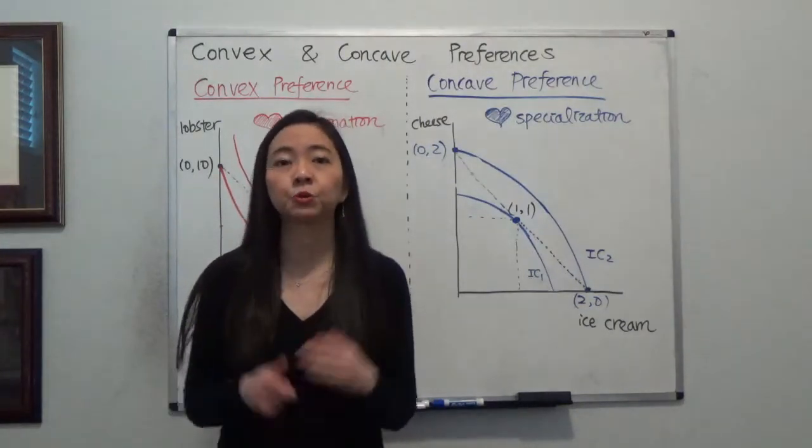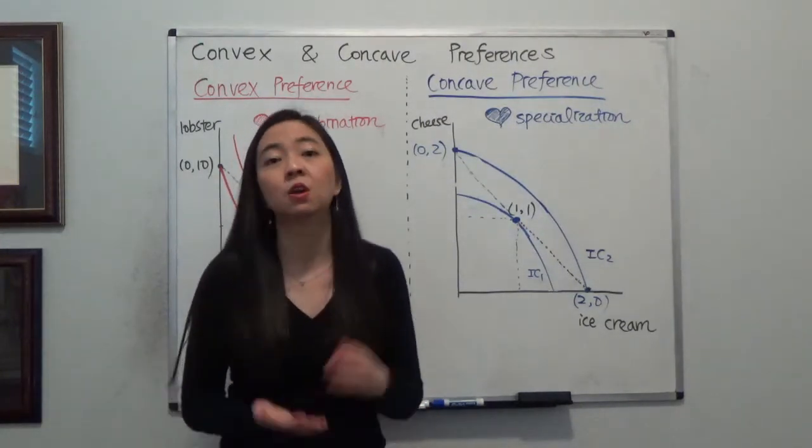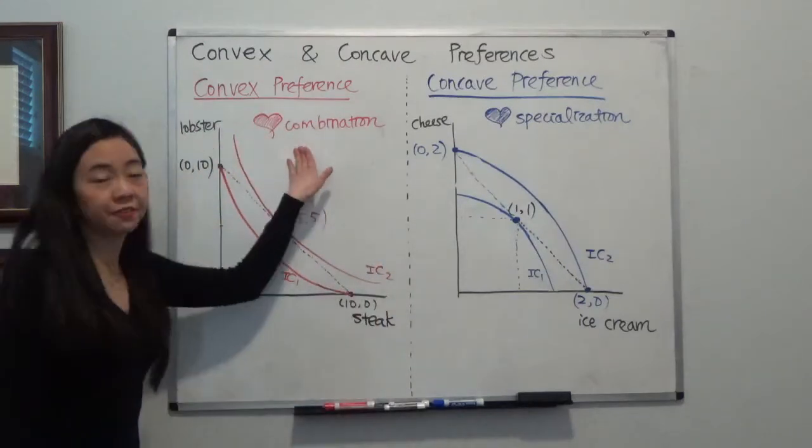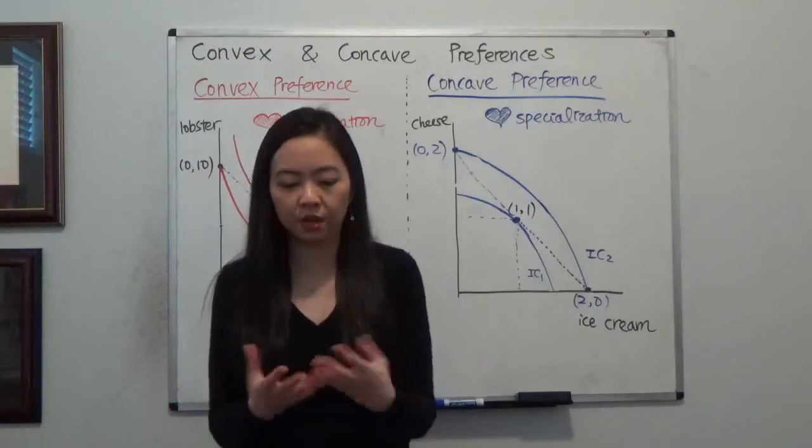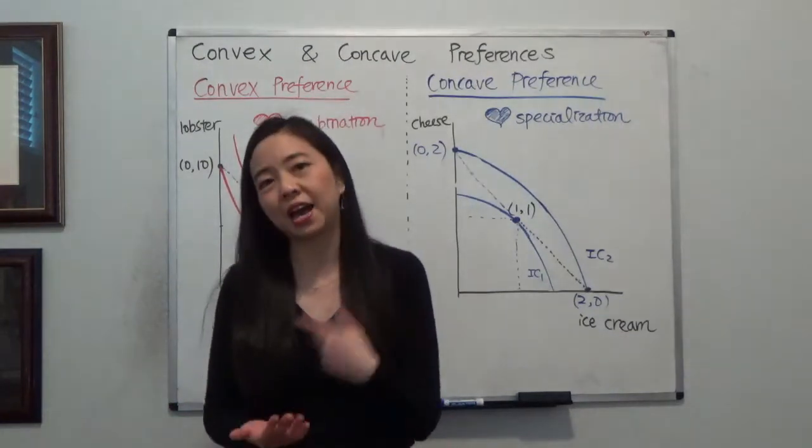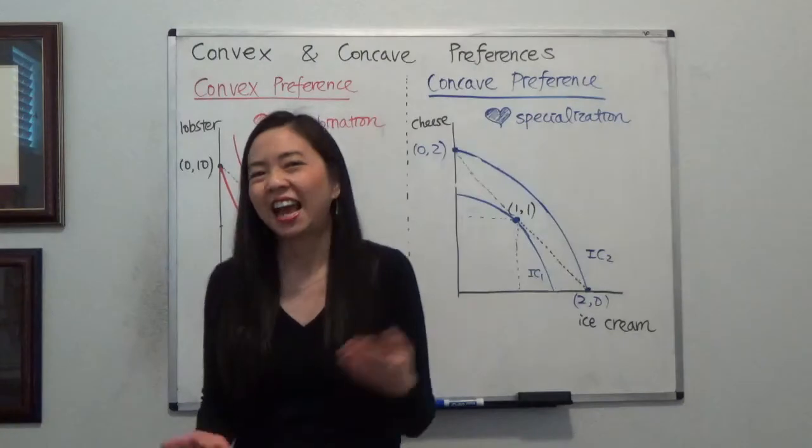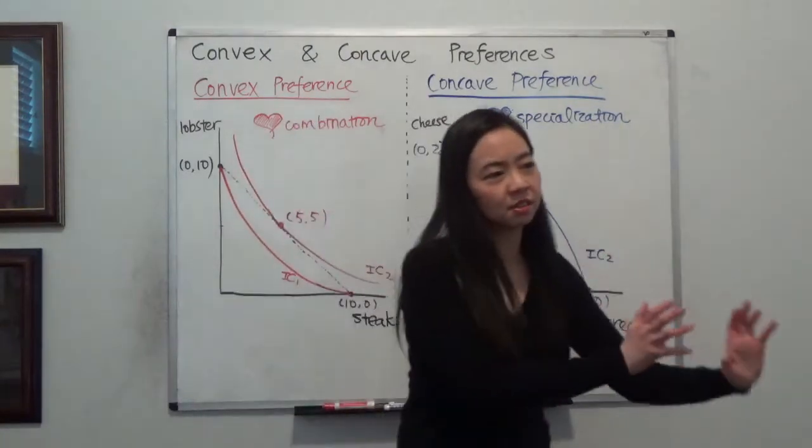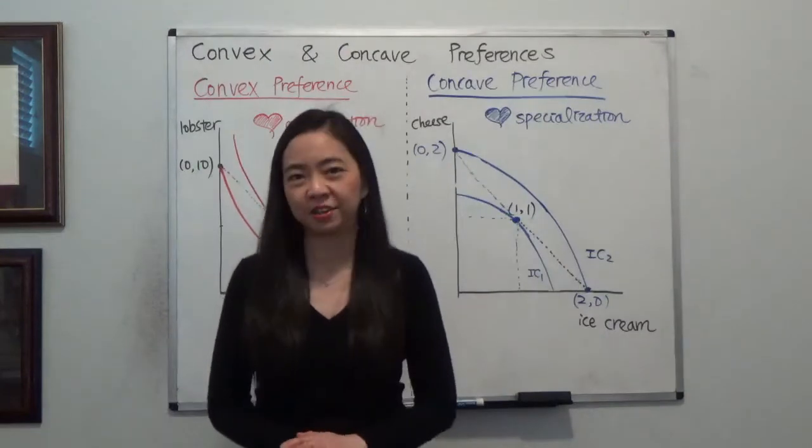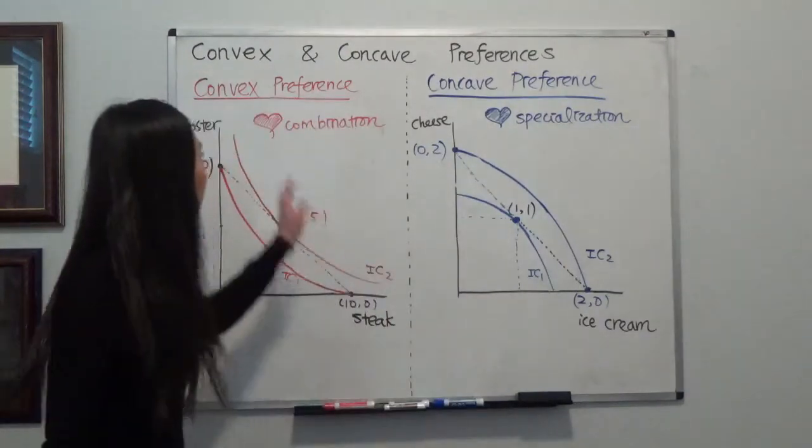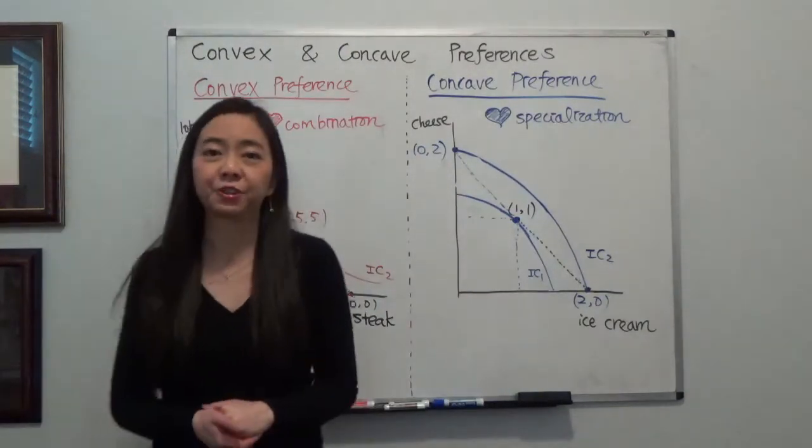Now, in intermediate micro, typically, we assume that consumers have a convex preference. Why is that? Because typically, we like to consume a combination of goods. You have a smartphone, you also have a laptop. It's not like you only want a laptop or you only want a smartphone. No, you like a combination of both. So typically, we assume that consumers have convex preference.